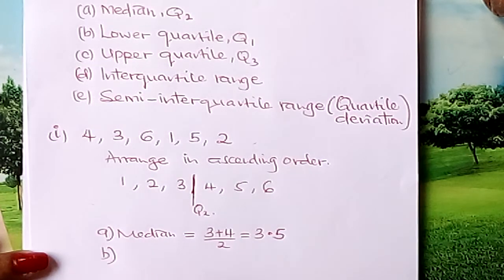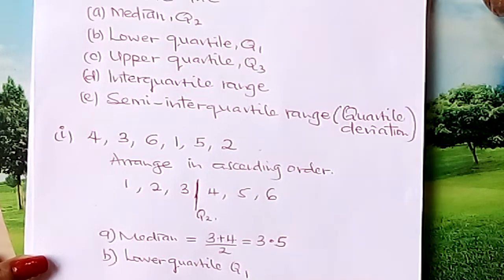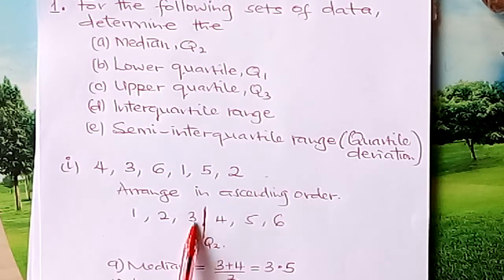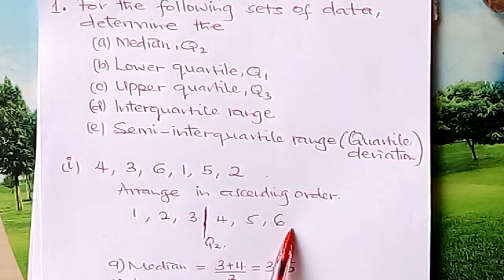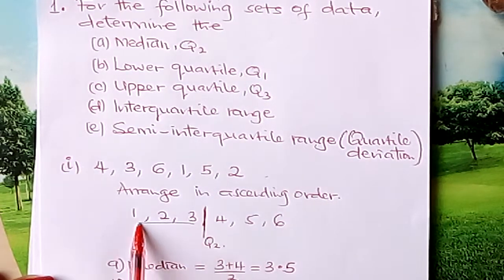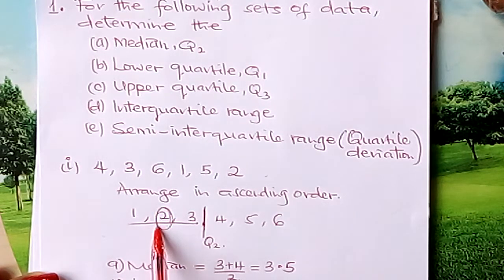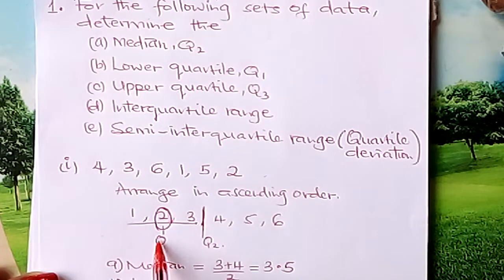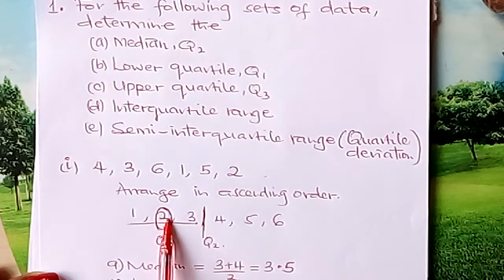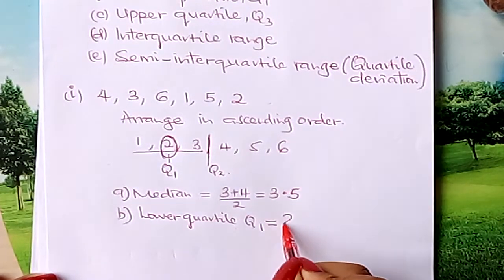We are told to find the lower quartile, Q1. After identifying our median, we see that the median divides the data into two parts: the lower part and the upper part. We go to the lower part — from 3 downwards. You pick the median of the lower data. This median is the one which is called the lower quartile. Therefore, our lower quartile Q1 is 2.